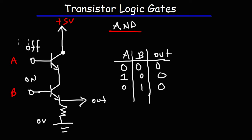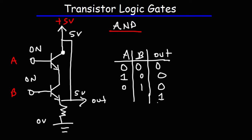The only way the output is going to change is if both transistors are active. Now we have current flowing through both transistors and also through the other resistor, so there's going to be a voltage drop across that. But when the two transistors are on, what we have is basically a direct wire to the output. So if this is 5 volts, this will be 5 volts. So the output will be 1 — it's going to be active. We have an AND logic gate — when A and B are on, the output is active.